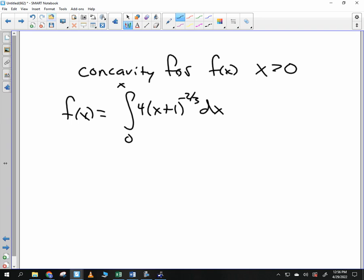F double prime. F double prime. Good. So you're looking for f double prime. Let's first consider f prime. What happens if I take the derivative of this guy? What happens if you take the derivative of that? That goes away, right? So f prime is 4 times x plus 1 to the negative two-thirds power.